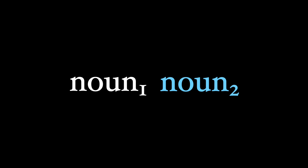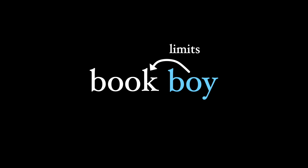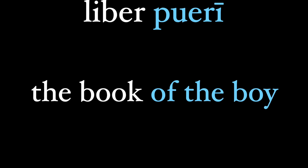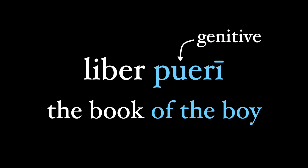In short, we have two different nouns and they refer to different things — we're not talking about apposition. And one of these nouns limits the other. What do I mean by limits? Well, let's take a look at an example. We have a boy and a book. There are tons of books in the world, but only this book belongs to this boy. So the boy is going to limit the book. We're going to define which book we're talking about by describing it as the book of the boy. So since the boy is the limiting noun, we will put it in the genitive case: liber pueri — the book of the boy. Which book? The boy's book.